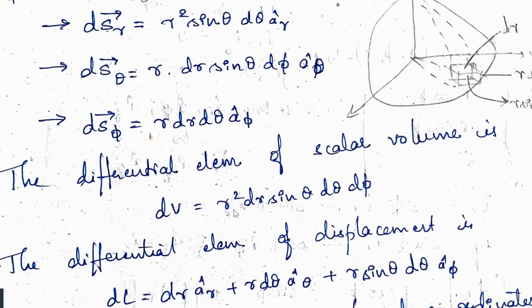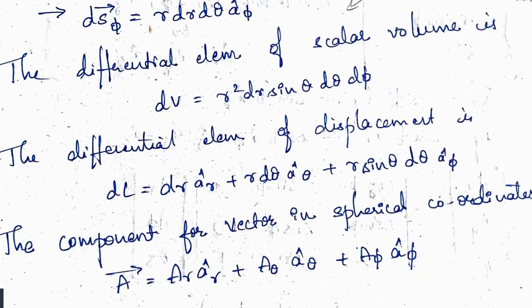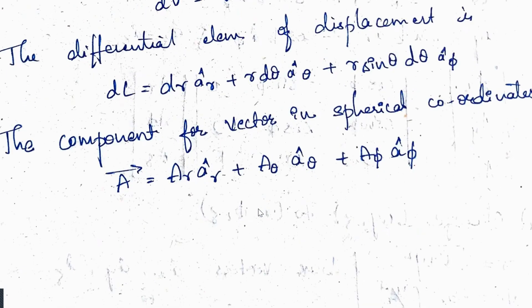For the spherical coordinate system, the differential volume element is: dv = r²·dr·sinθ·dθ·dφ. The differential element of displacement is: dl = dr·âr + r·dθ·âθ + r·sinθ·dφ·âφ. The component vector follows the same general form but with coordinates r, θ, φ. Capital A stands for the constant and small â stands for the unit vector.